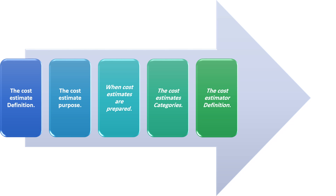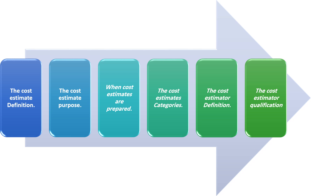Point six — the cost estimator qualifications: a good estimator must have a vision of the whole building and be able to think and perceive the details of the project at the same time. He or she must know the expected lifespan of construction materials, accounting, taxes, law, economics, and engineering design.